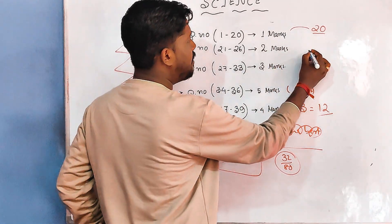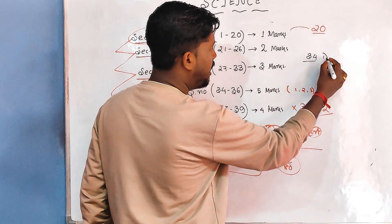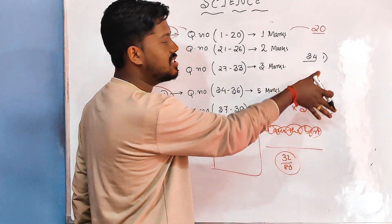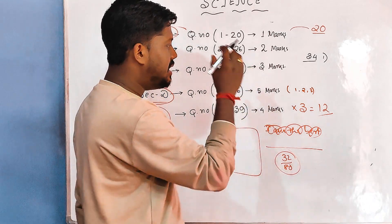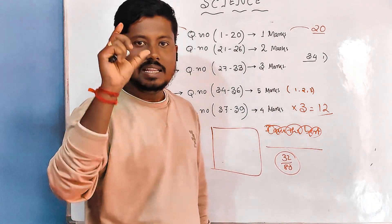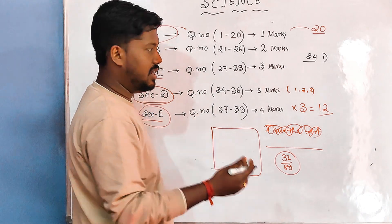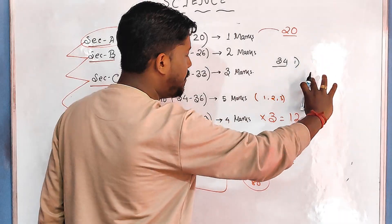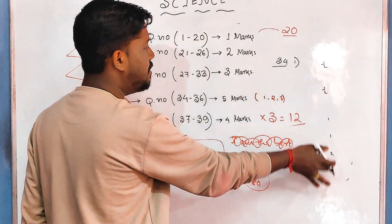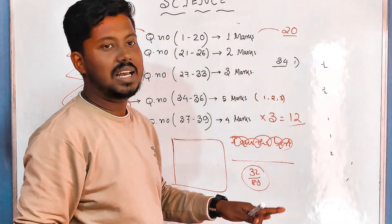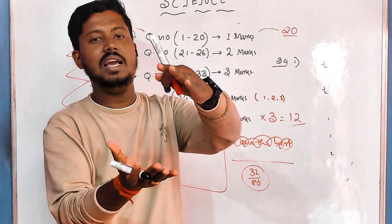From question 34 onwards in Section D, you need to write point-wise. Don't write like a paragraph — write point-wise. When evaluators check papers, they first see your presentation, then your handwriting, and then how you have represented your answer copy. Write step-by-step with half marks, one mark, two marks, like: point one, point two, point three — question-wise, point-wise.